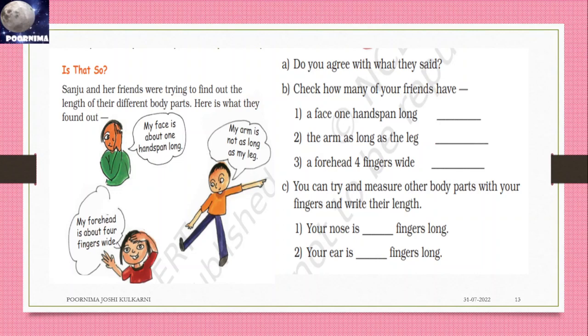Is that so? Sanju and her friends were trying to find out the length of their different body parts. Here is what they found out: My face is about one hand span long. My arm is not as long as my leg. My forehead is about four fingers wide.